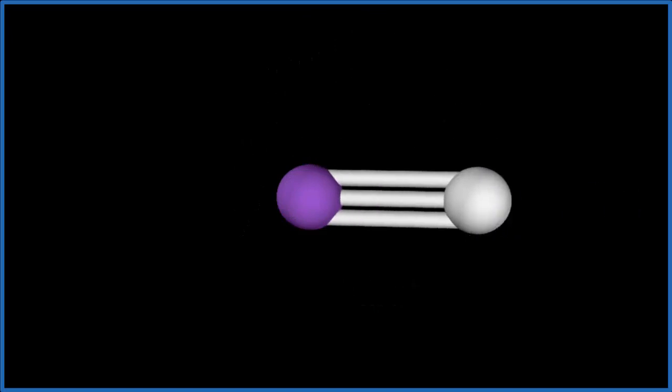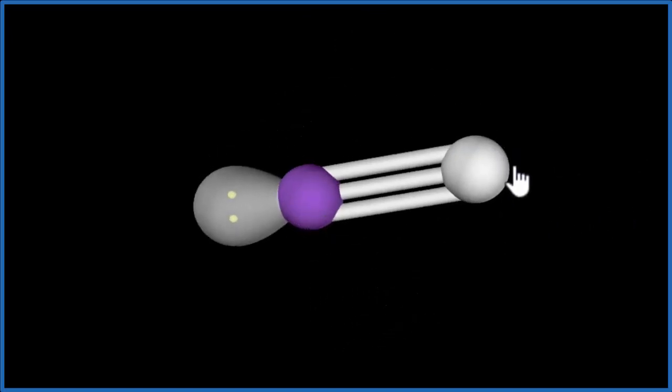If you add a lone pair here, like this, it's going to go to the opposite side as to be as far away from these as it can. If we add another lone pair, that'll show up right here. So we maintain our linear molecular geometry.